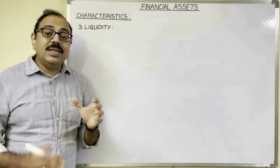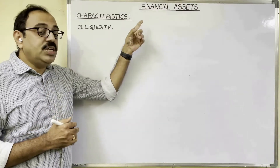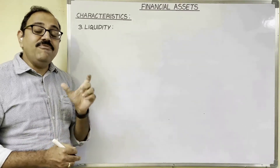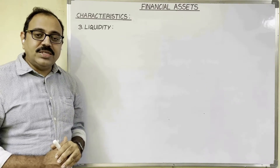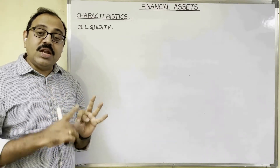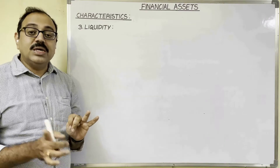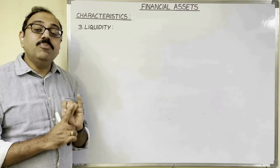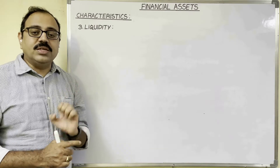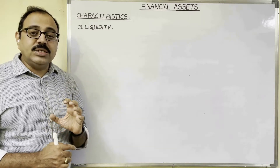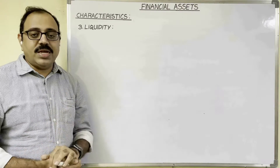The third feature is liquidity. Liquidity means the ease with which we can convert a financial asset into cash. Some financial assets are liquid in nature. For example, treasury bills, certificates of deposit, commercial papers, bills of exchange, call money, and shares — all these can be easily converted into cash by the investor.